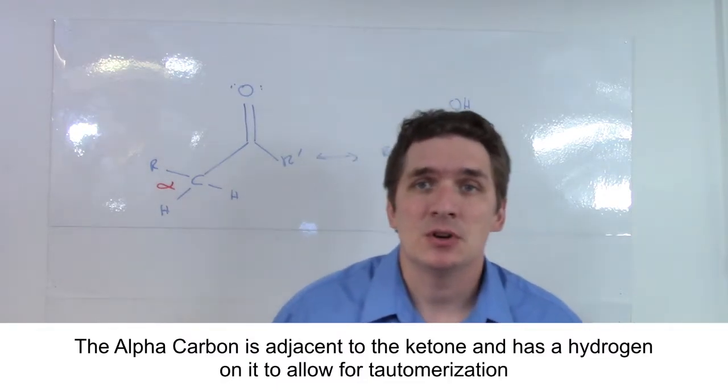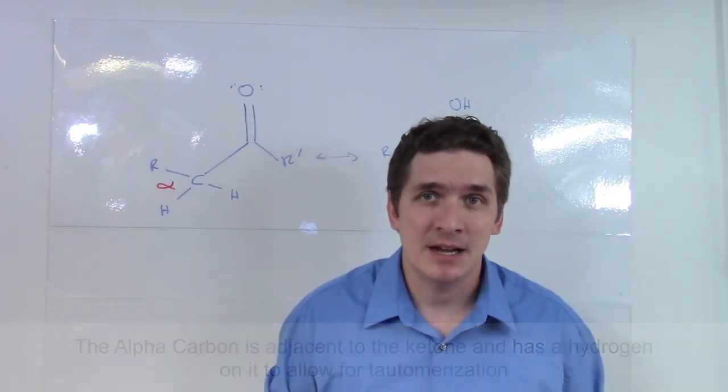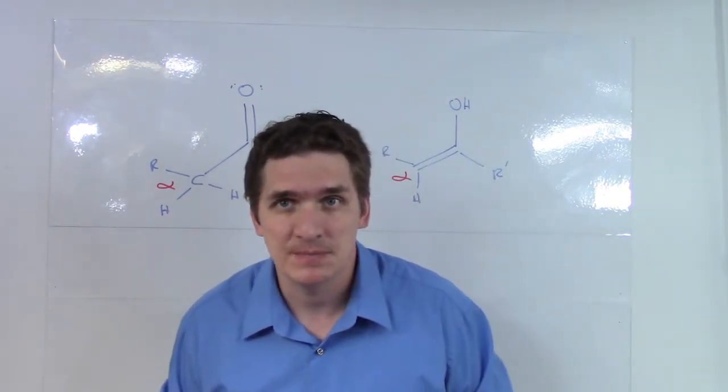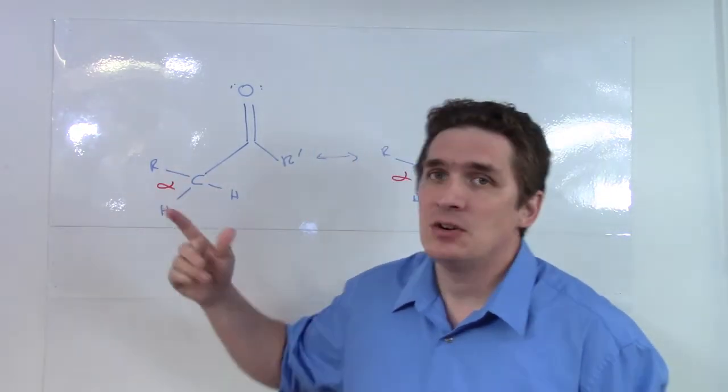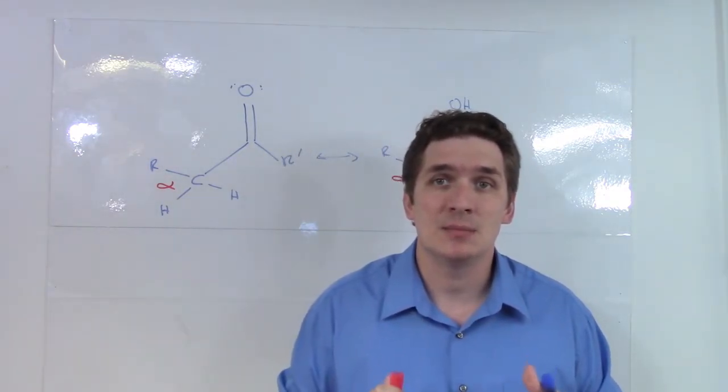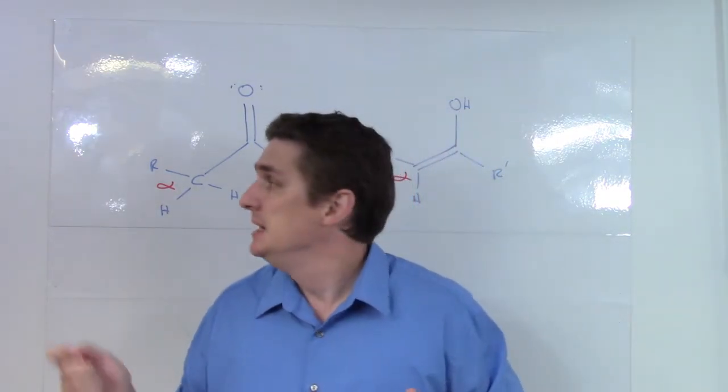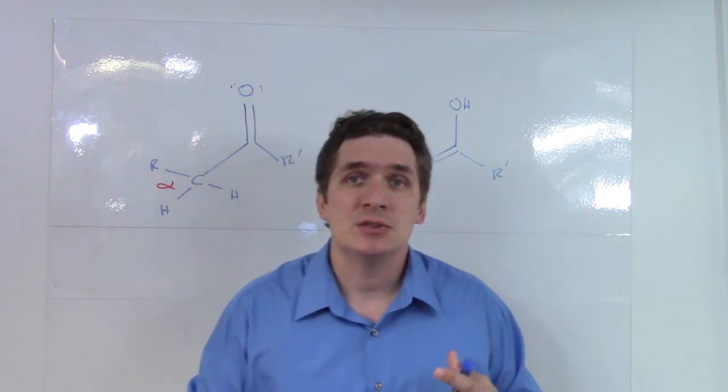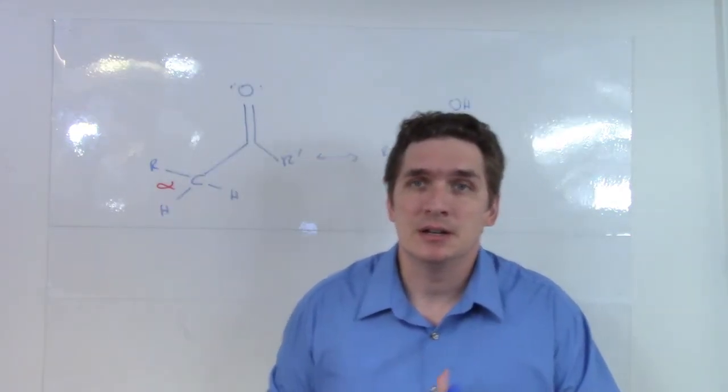A few important points about this alpha carbon. First, if it does not contain a hydrogen, it cannot undergo tautomerization. In this case, I have two H's and an R. If all three of those groups were R, we would not be able to undergo tautomerization. The reason is that tautomerization involves a hydrogen transfer. If this carbon doesn't have hydrogen, it has no hydrogens to transfer, and therefore cannot undergo tautomerization.